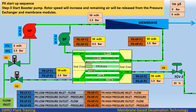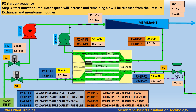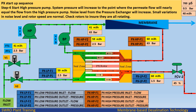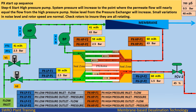Rotor speed will increase and remaining air will be released from the pressure exchanger and membrane modules. PX startup sequence, step 4: start the high-pressure pump. System pressure will increase to the point where the permeate flow will nearly equal the flow from the high-pressure pump. Noise level from the pressure exchanger will increase; small variations in noise level and rotor speed are normal.